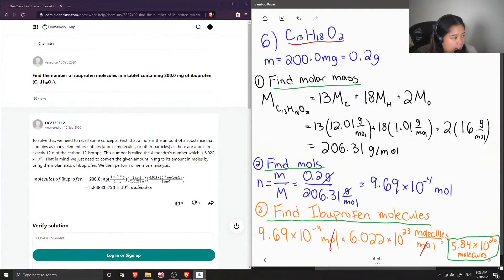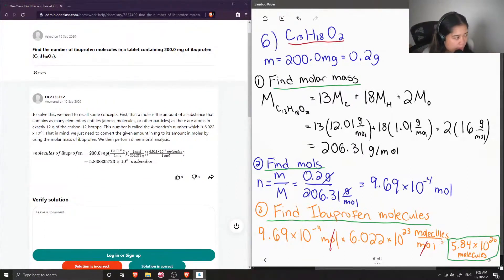Okay, so the junior tutor said that to solve this, we need to recall some concepts. First, that a mole is the amount of a substance that contains as many elementary entities, such as atoms, molecules, or other particles, as there are atoms in exactly 12 grams of the carbon-12 isotope. This number is called the Avogadro's number, which is 6.022 times 10 to the 23. That in mind, we just need to convert the given amount in milligrams to its amount in moles by using the molar mass of ibuprofen. Then we perform dimensional analysis.